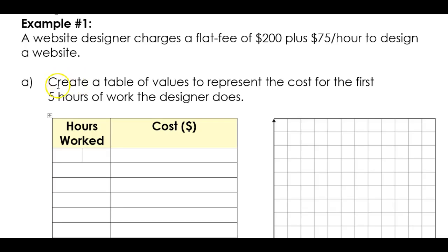So the question says, create a table of values to represent the cost for the first five hours of work the designer does. All right, so we're going to start with zero hours, and I'll talk about that in a second. And then one, two, three, four, five. So I'm just filling in my table of values. So I know that the cost for zero hours, before he even starts to work on the website, it costs $200. So that is my initial value. It's just like a startup cost and so on and so forth.